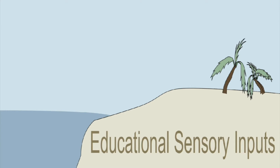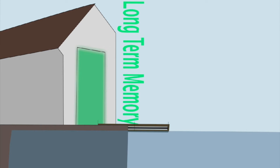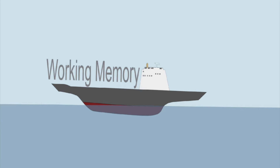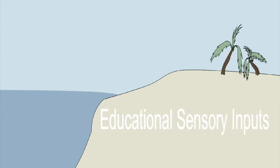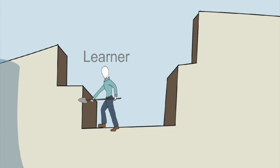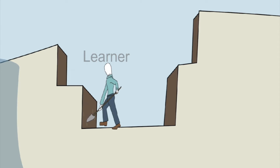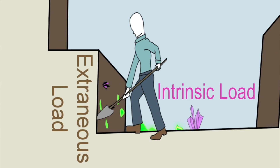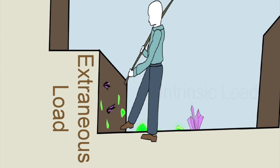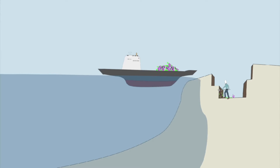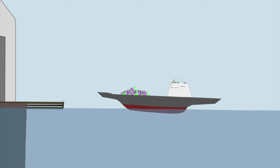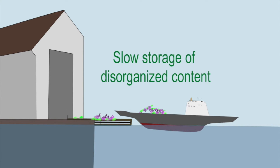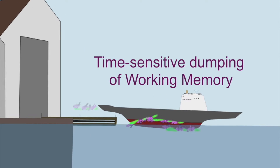We have our educational sensory inputs — podcasts, textbook, video, etc. — long-term memory waiting to have nicely packaged information stored, and working memory with limited capacity and limited time to shuttle information across. Our poor little learner is digging through all this unnecessary information to find the actual content. Eventually the learner finds the intrinsic load — the little gemstones — but they're surrounded by extraneous load, all that dirt. Some of those gemstones get plopped on the working memory boat, which shuttles them across quickly. Because it's all just disorganized information, the brain tries to store as much as it can, but long-term memory requires organized input — so some gets in and everything else is lost. Time-sensitive dumping.